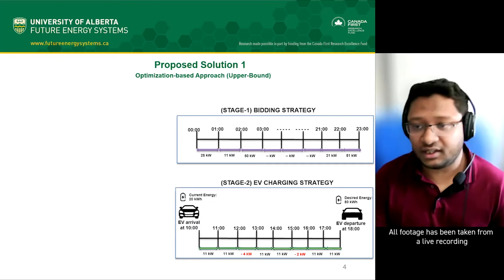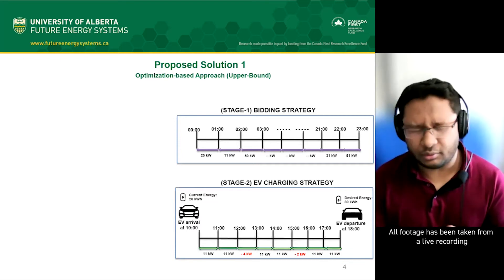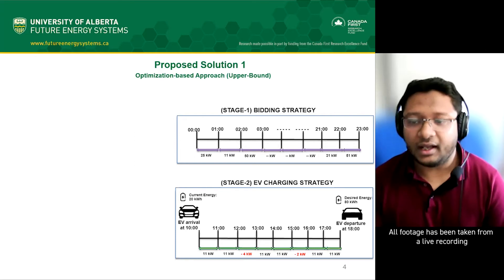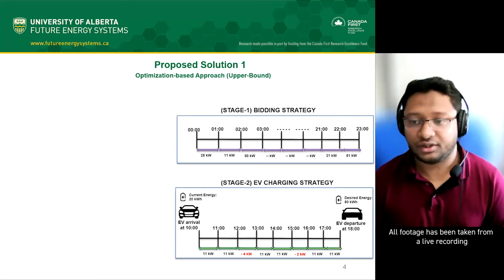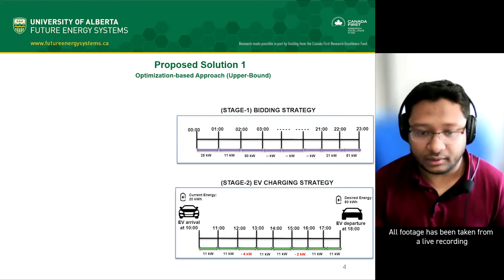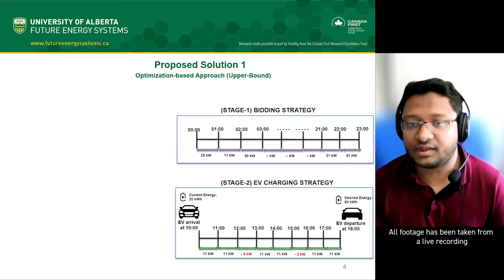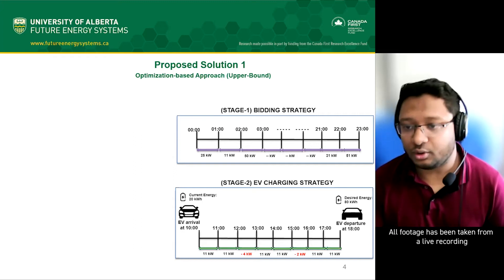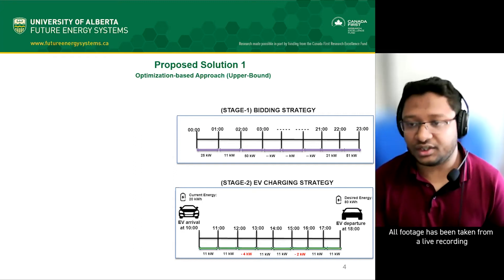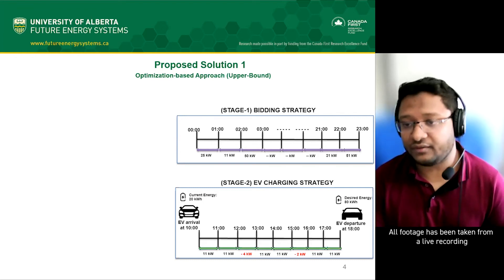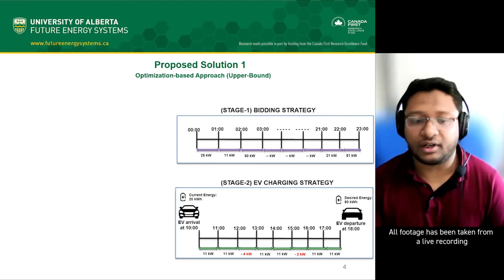In Stage 2, an electric vehicle arrives — say at 10 in the morning — and wants to depart at 6 in the evening, needing to be charged to a certain amount of energy. During this eight-hour slot there are various ways to charge or discharge, shown by the green arrows. The red values indicate discharging the EV and the black ones indicate charging.